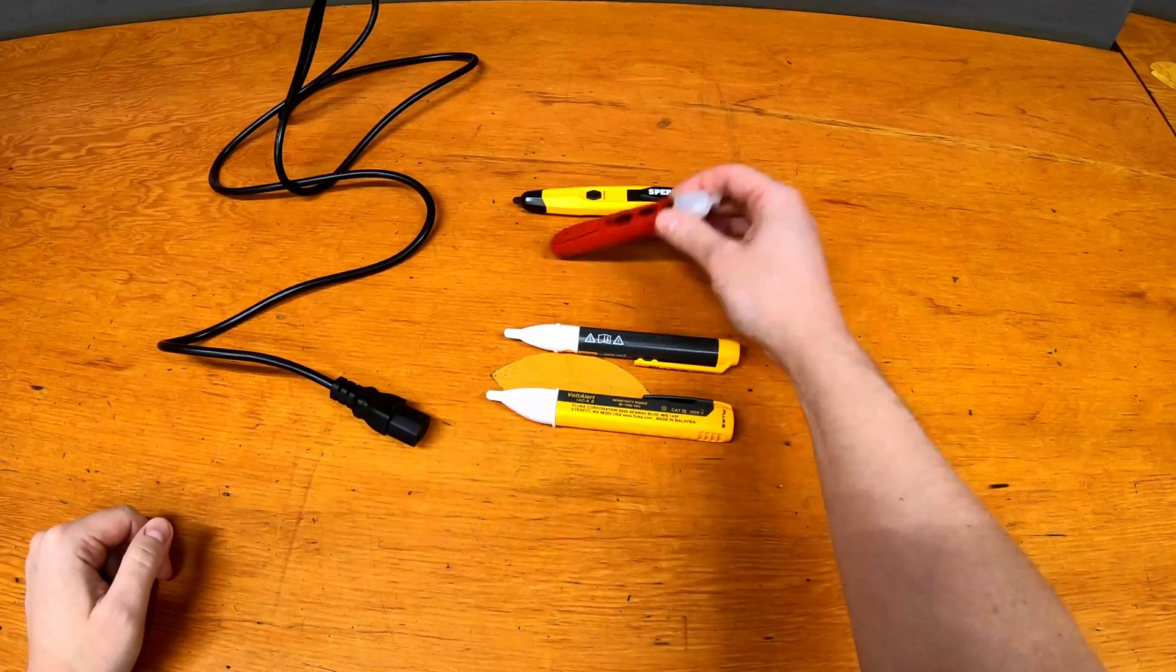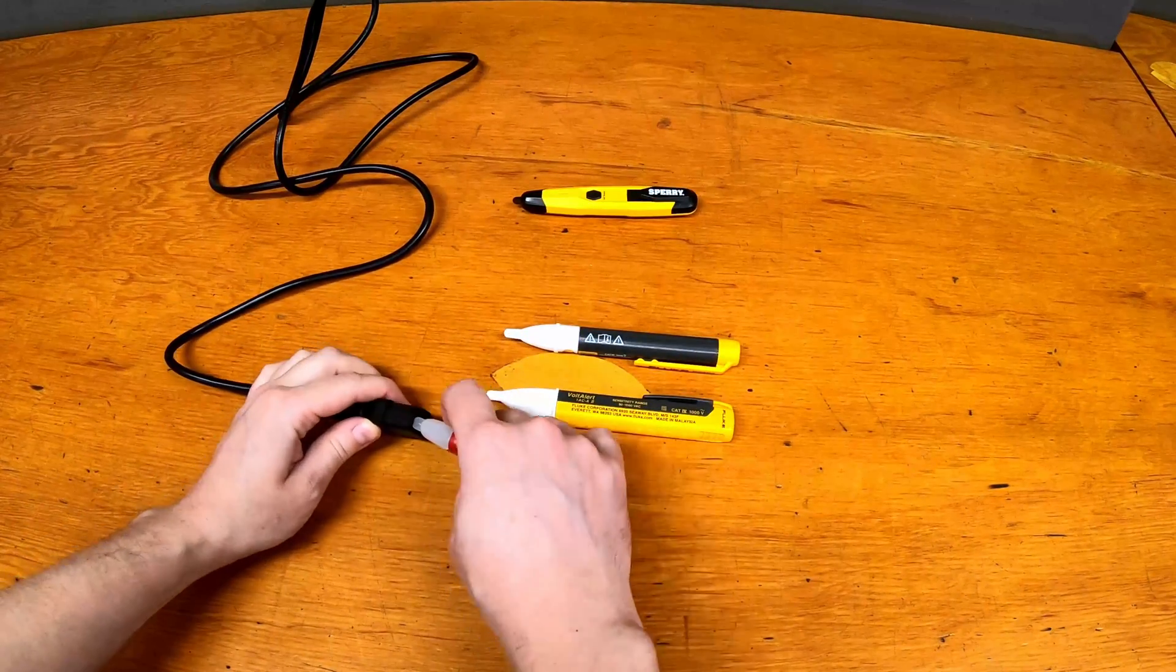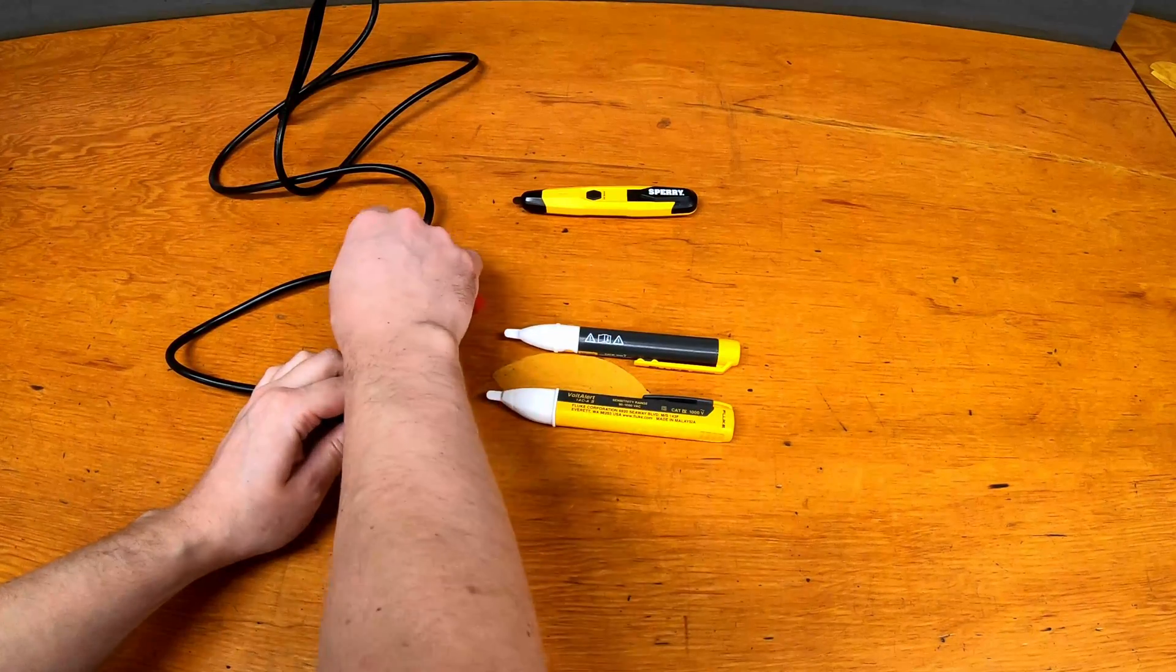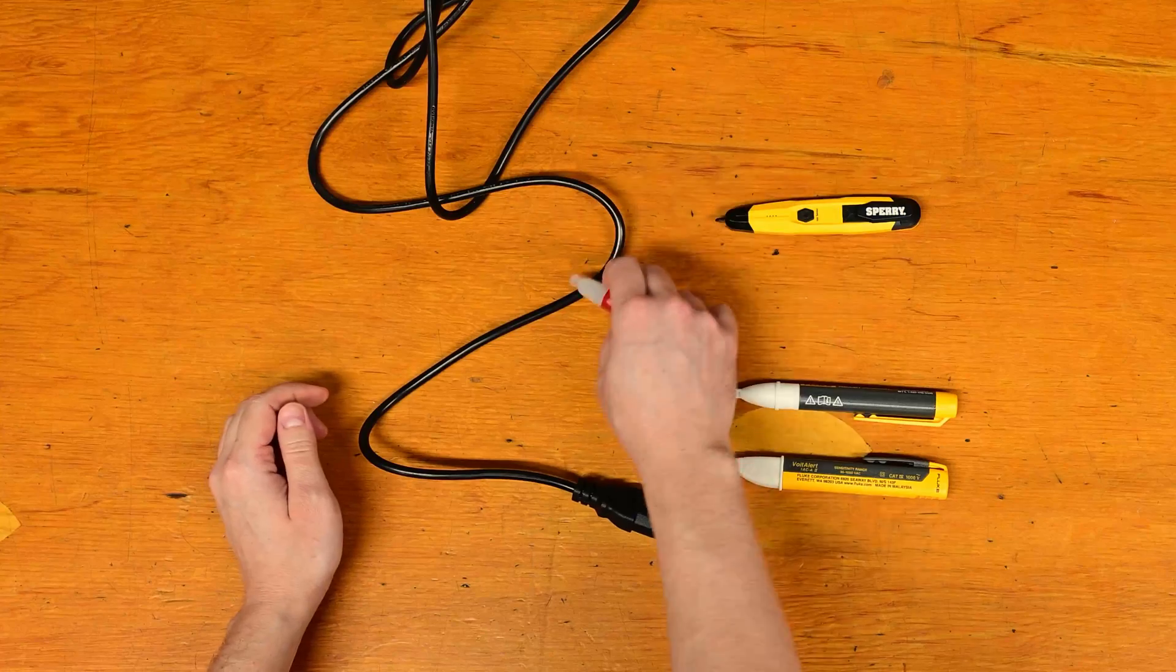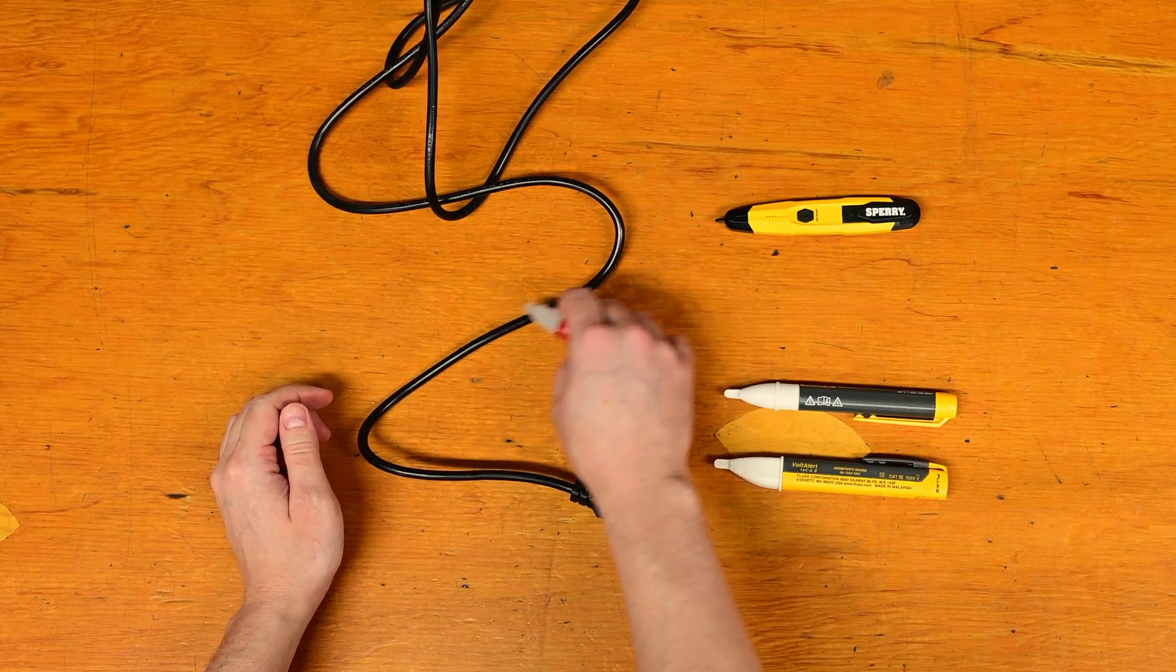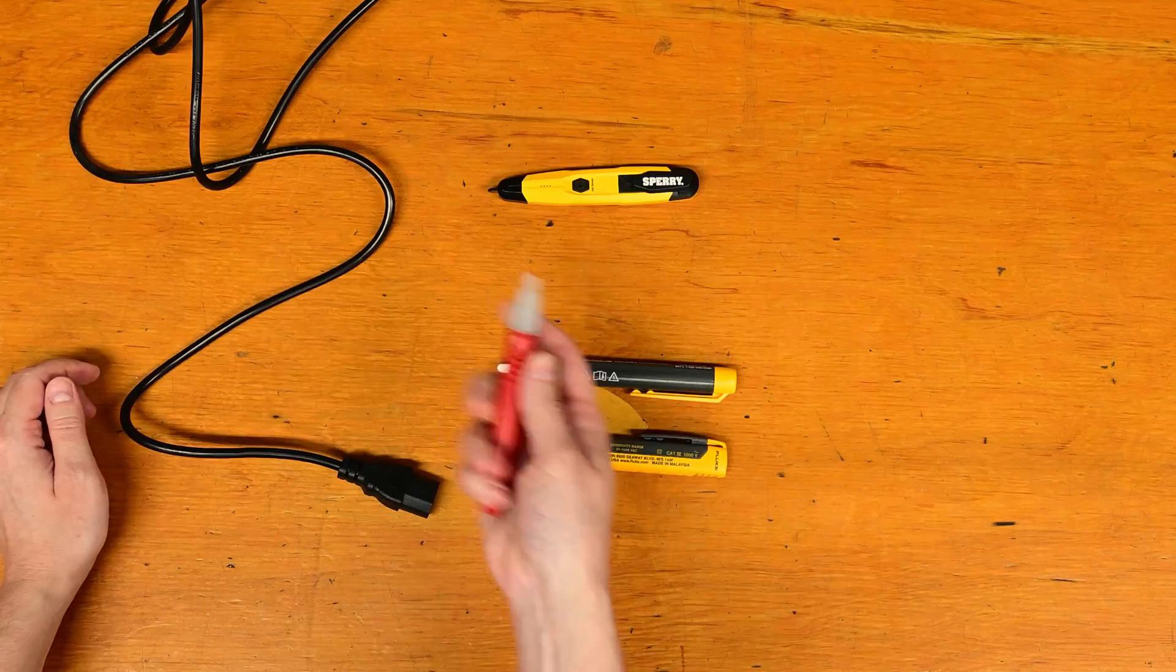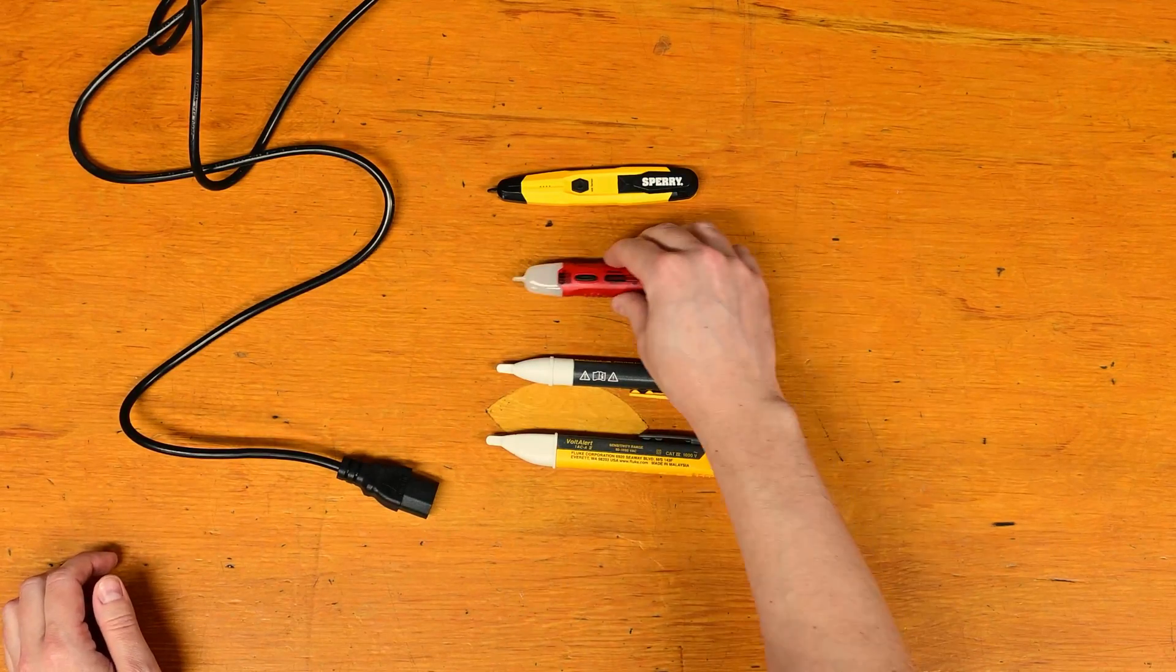But then moving over to these ones, the Gardner Bender, you press and hold like I said, and if you get close enough, you don't even have to get it in there and it'll go off. And similarly on the line here, you're pretty much, wherever it is within say a centimeter or half an inch, it'll start going off. So a little bit more sensitive to the field.